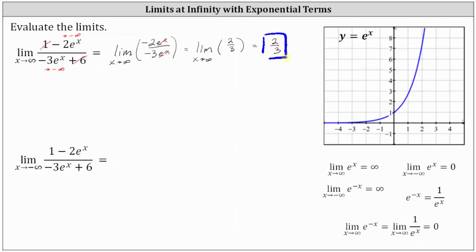Let's take a look at a second approach. Remember when we had polynomials in the numerator and denominator, we divided every term by the highest power of x in the denominator. Well, in this case, because negative three e to the x approaches negative infinity, what we can do is divide everything by e to the x.